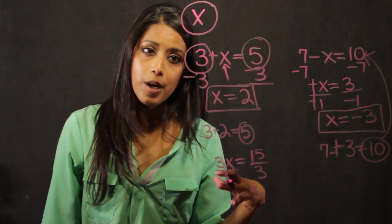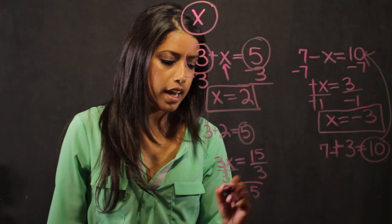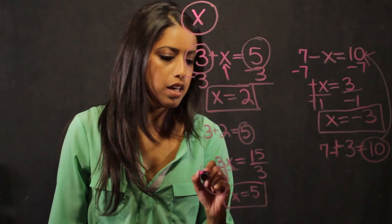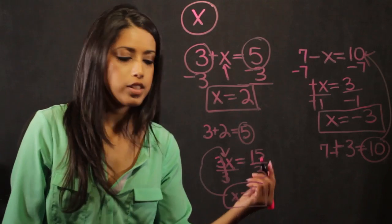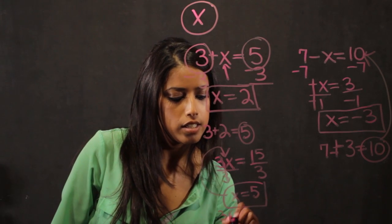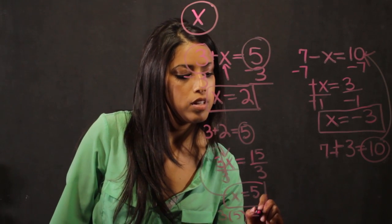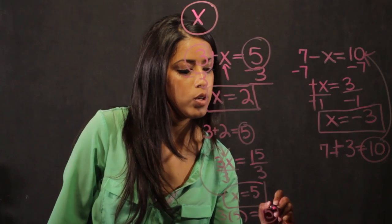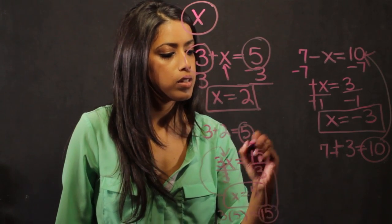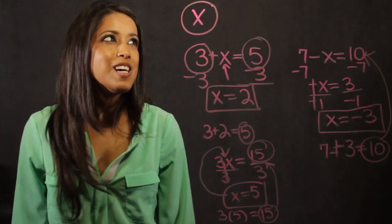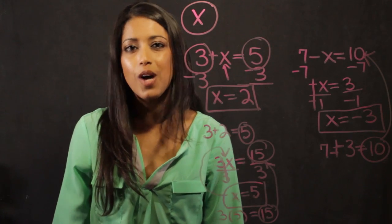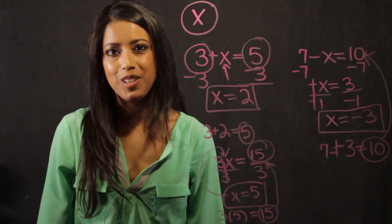And if I want to check my work like I did up here, I take x, I put it in, and I see if it's true. Is 3 times 5, 15, which is equal to the 15 that we started with. So this has been a little bit on two-step equations, solving them with rational numbers for 7th grade.